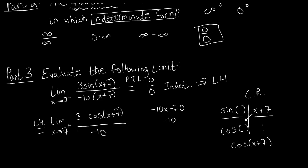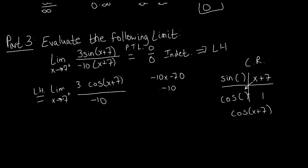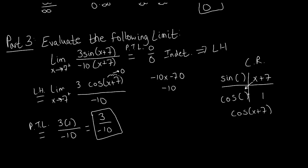Now we pass to the limit again inside this new form. Plugging negative 7 into the argument (x + 7) still gives 0, and cosine of 0 evaluates to 1. The denominator has no x, so it stays as negative 10. We get 3 times 1 over negative 10, which simplifies to negative 3/10. So our limit — originally an indeterminate form — was resolved using L'Hopital's rule by taking derivatives of the numerator and denominator and then passing to the limit.